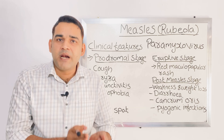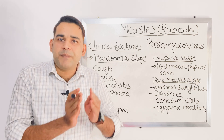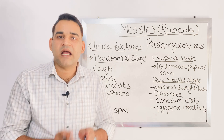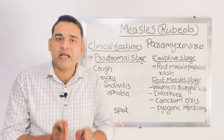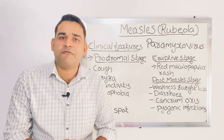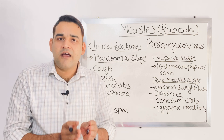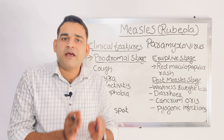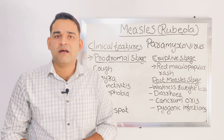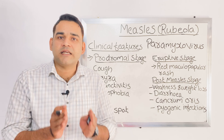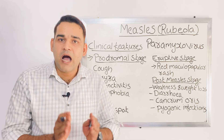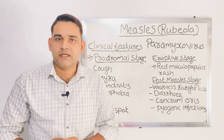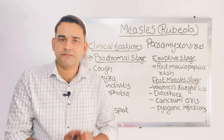Regarding the epidemiological factors, mainly three things we can see: the agent, the host, and the environment. The agent of measles is an RNA virus of the paramyxovirus group. That is the agent of measles.